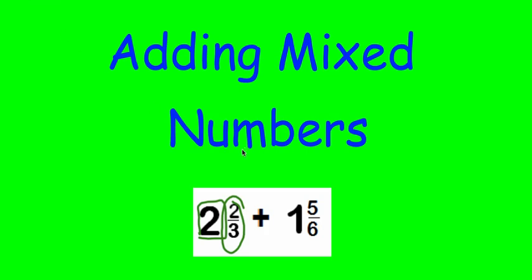So when we're adding mixed numbers things are going to be a little bit different. We're going to do an approach where we add the fractions and the whole number separately. So when I give you the next problem you're going to think about adding the two and the one separately from two-thirds and five-sixths.